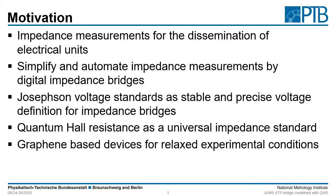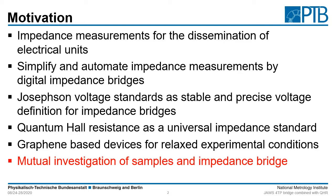If we make use of graphene for the quantum hall devices we can also get relaxed experimental conditions, such as raising the temperature to liquid helium temperature and lowering the magnetic field to a couple of Tesla. Moreover we get the opportunity for a mutual investigation of the samples and the impedance bridge. For example we can investigate the AC properties of our quantum hall device by using our four terminal pair impedance bridge.